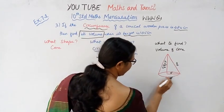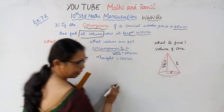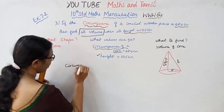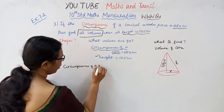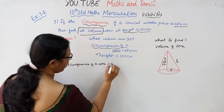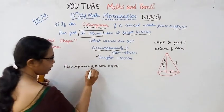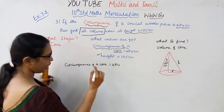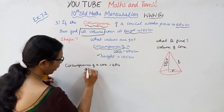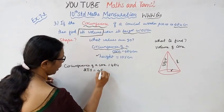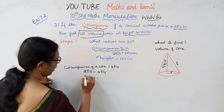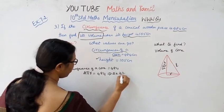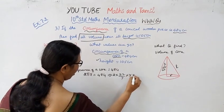The base of a cone is circular, so we use circumference of a circle. Circumference of a cone = 484 cm. The formula for circumference of a circle is 2πr. So 2πr = 484, that implies 2 into 22 by 7 into r = 484.